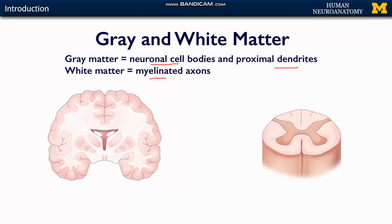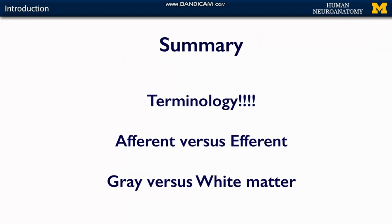In the spinal cord, it is the vice versa — gray matter is in the center and white matter is placed in the periphery, as clearly visible in the diagram. So to summarize: the key terms to take from this lecture are afferent versus efferent — afferent is arriving information and efferent is exiting information — and gray matter versus white matter. You must be very familiar with these terms. Thank you very much.